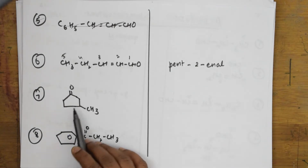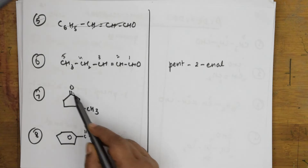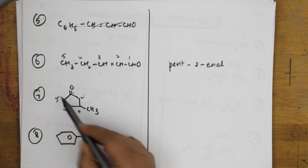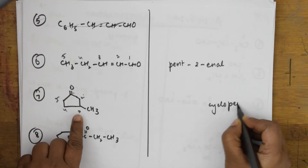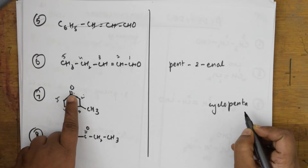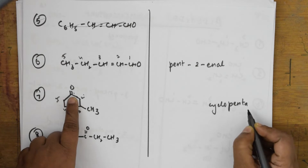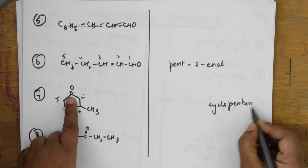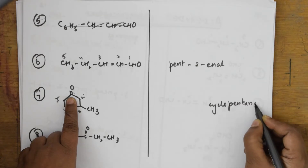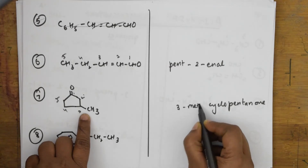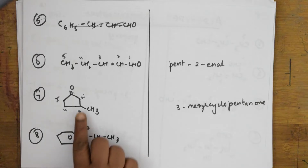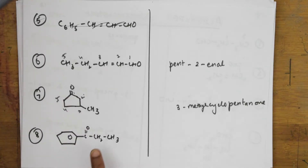This is a cyclo group with five carbons — one, two, three, four, five — pent. There is a ketonic group, so we give the suffix '-one'. From alkane, take out 'e' and write '-one': cyclopentanone. But here we also have a substituent — a methyl group. Alkyl groups are taken as substituents, so this is 3-methylcyclopentanone.